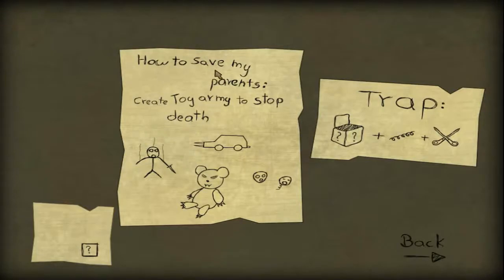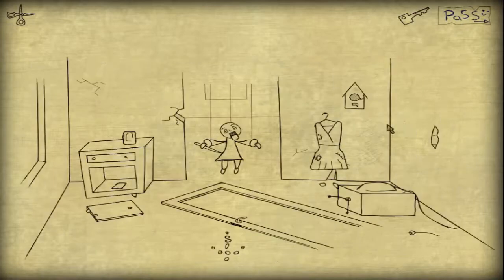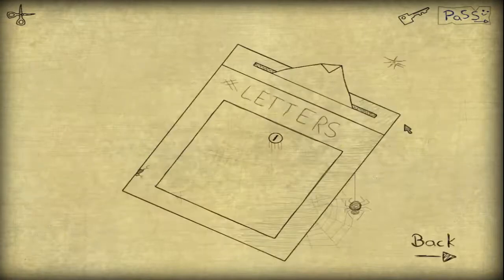How to save my parents. Create toy army to stop death. Trap. The toy box plus springs plus... Alright. Say we're gonna kill death. And I think the key used for this. Yeah.